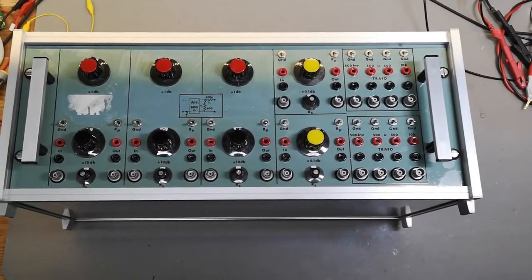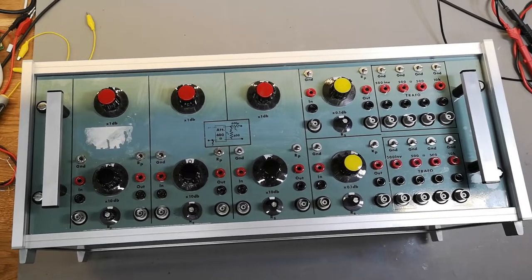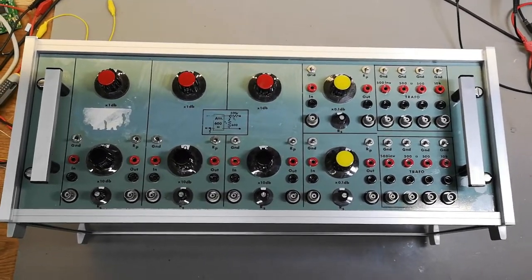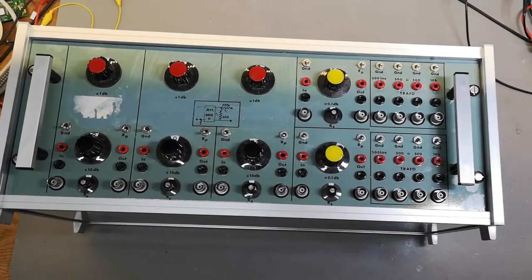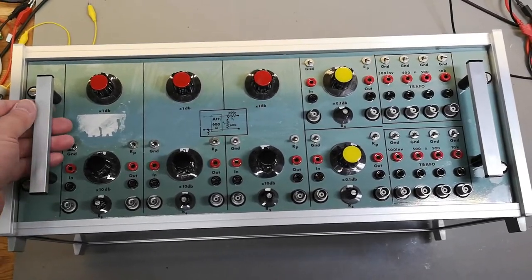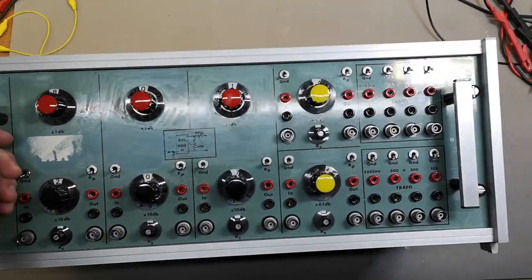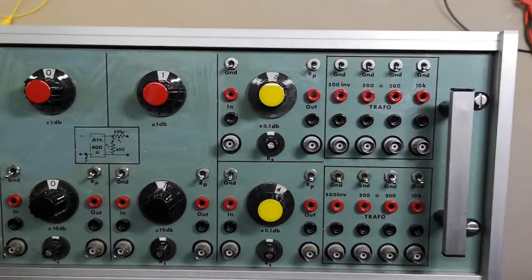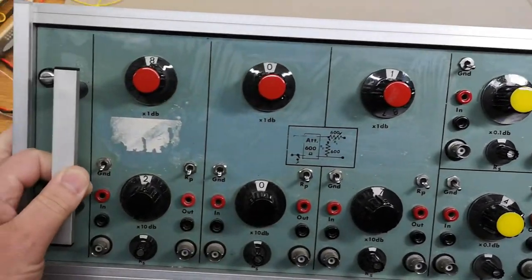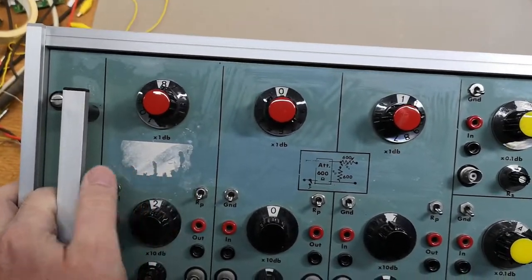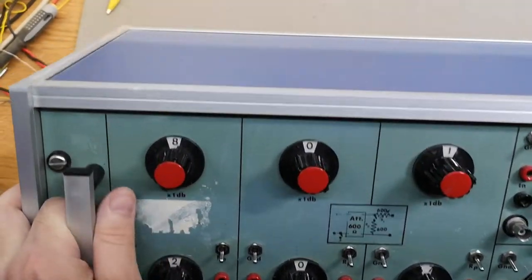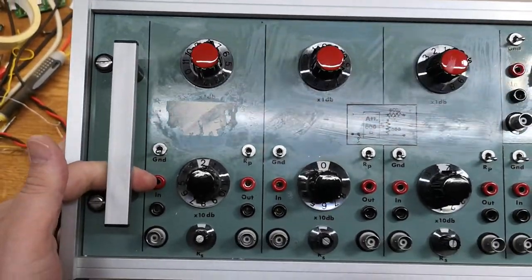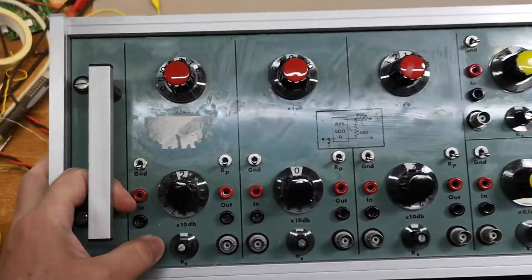Welcome to a new teardown video. This time it's an unknown box and it's also an unnamed box. See, no names whatsoever, numbers, type numbers, anything. I tried to remove some labels here on the front to see if there was a hidden name or number or something, but there's absolutely nothing.